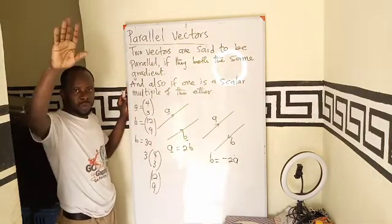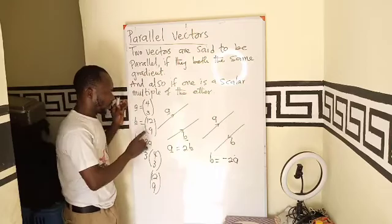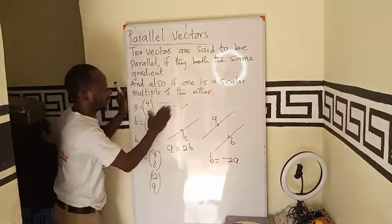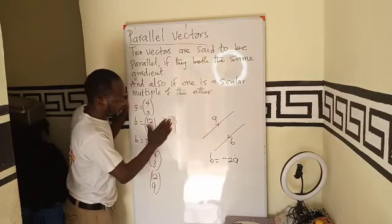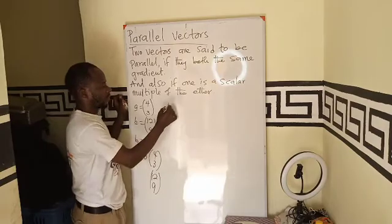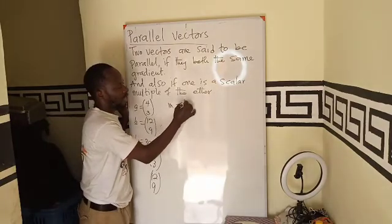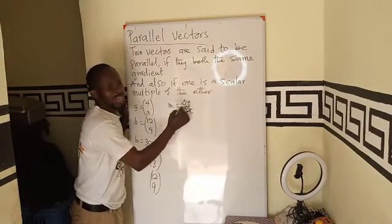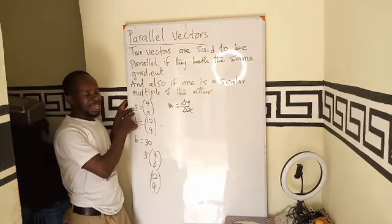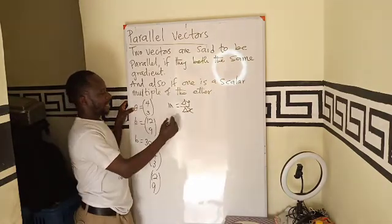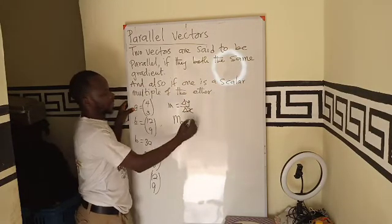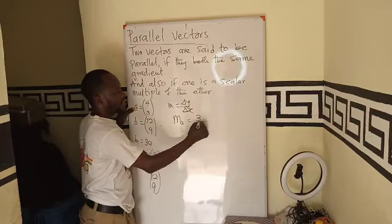So if I have this now, if I want to check, the vectors have the same gradient. You know, gradient is always change in the y-axis over change in the x-axis. So if I want to find the gradient of vector A, it is going to be the y, which is 3 divided by 4.